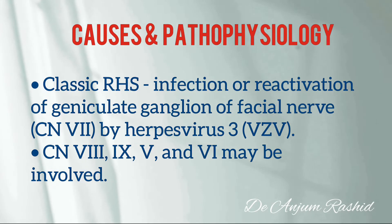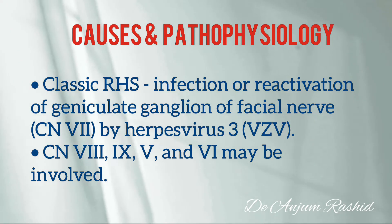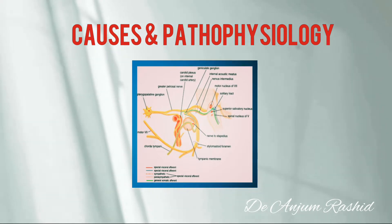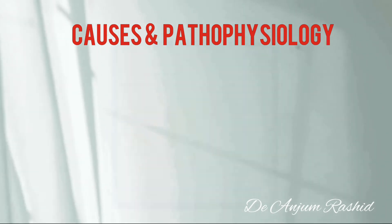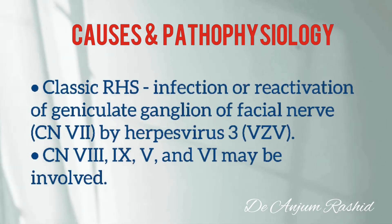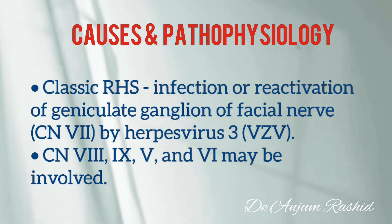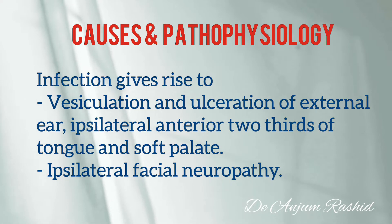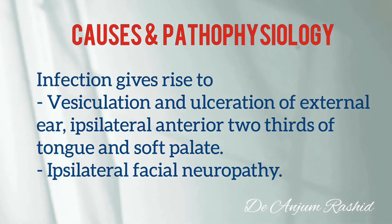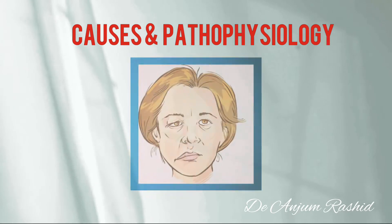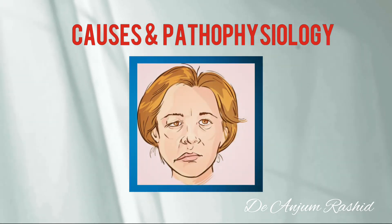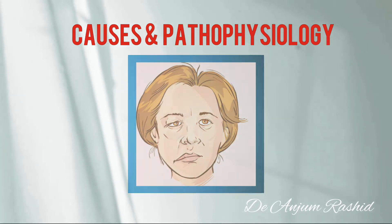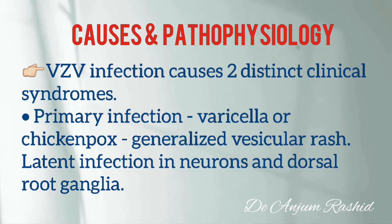Classic Ramsay Hunt Syndrome is due to infection of the geniculate ganglion of the facial nerve, which is the seventh cranial nerve, and it is caused by herpes virus 3, also known as varicella zoster virus. Other cranial nerves might also be involved, including cranial nerves 8, 9, 5, and 6. This infection gives rise to vesiculation and ulceration of the external ear and ipsilateral anterior two-thirds of the tongue and soft palate.